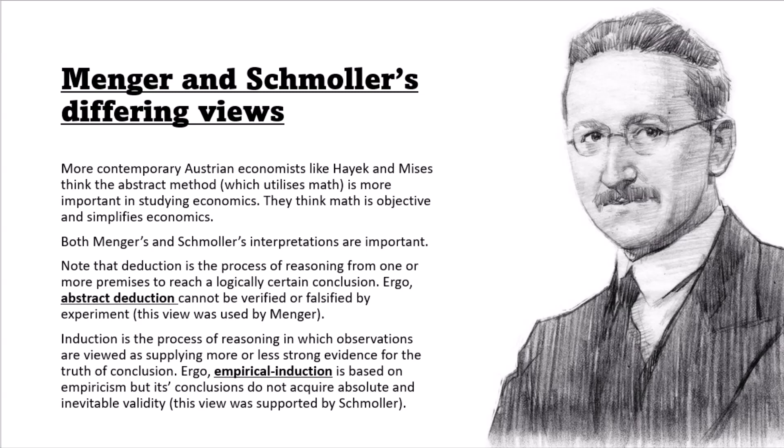More contemporary Austrian economists, such as Friedrich von Hayek and Ludwig von Mises, think the abstract method, which utilises math, is more important in the study of economics. They think math is objective and simplifies economics. In a way it does, because you can quantify concepts such as the way an individual values something — you can quantify that with a utility function and then put these utility functions together for various budget constraints to get things like demand curves, which is obviously extremely important in economics.